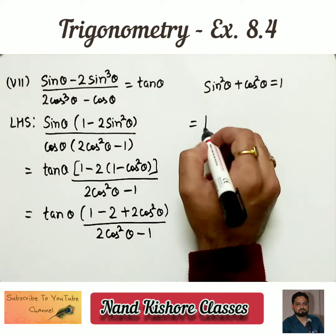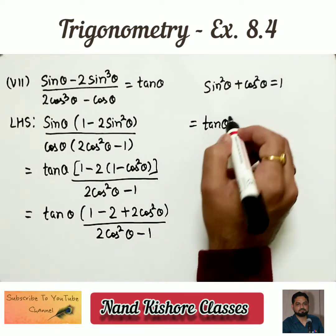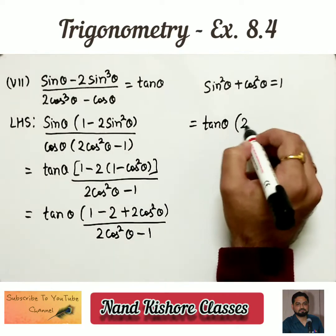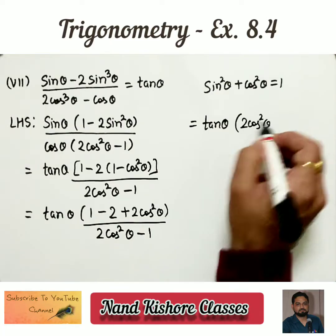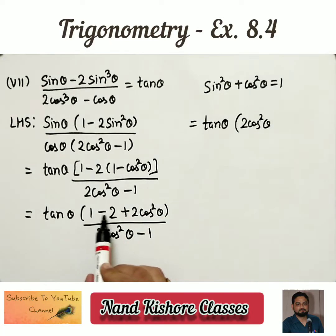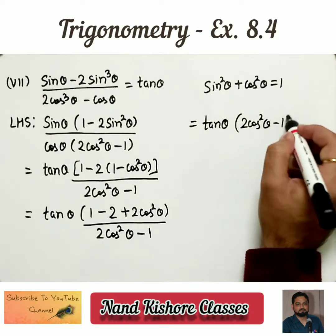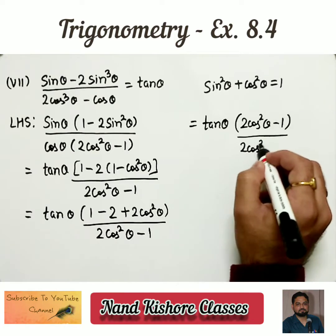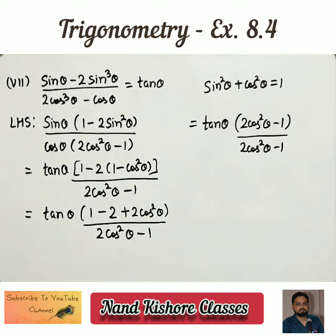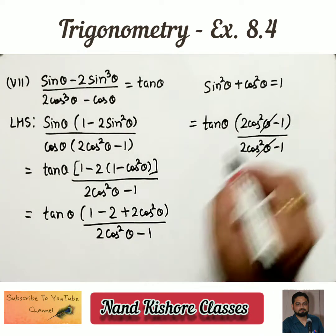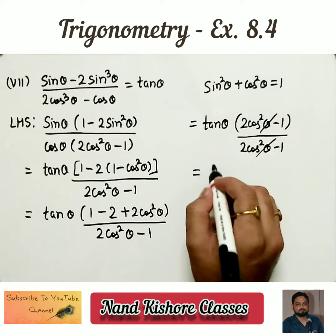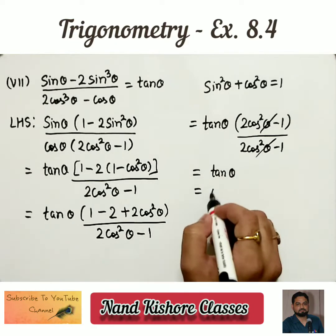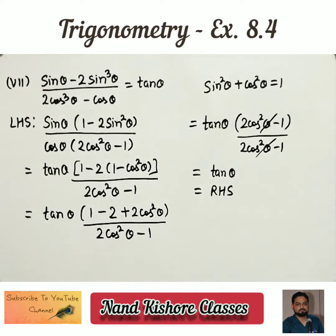Continuing to the next step: tangent θ as it is. In the numerator, 2 cos square θ is positive, and 1 minus 2 gives minus 1. The denominator is again 2 cos square θ minus 1. These two terms cancel and we get tangent θ, which is the right side. I hope it is clear.